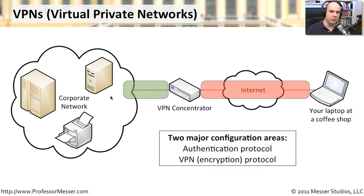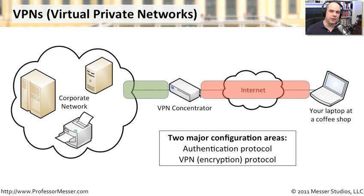When talking about virtual private networking, I'll focus on two different kinds of protocols: an authentication protocol and a VPN or encryption protocol. There are specific protocols used just to get you authenticated and build the tunnel to the VPN concentrator, and there are a number of authentication protocols to choose from. Once authenticated, you then need to send data over an encrypted tunnel using a completely different group of VPN protocols.